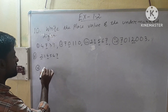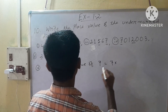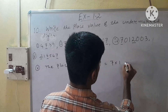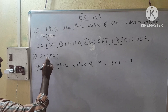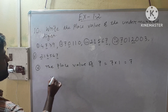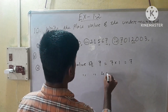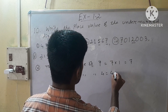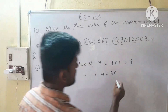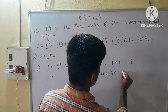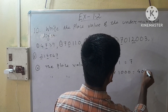First we find the place value of 7. 7 is equal to 7 into 1, so that's 7. Next, we have to find the place value of 4. Place value of 4 is equal to 4 into... After 4 we have 3 digits, so after 1 we have to put 3 zeros. So our result will be 4,000.